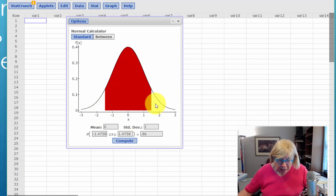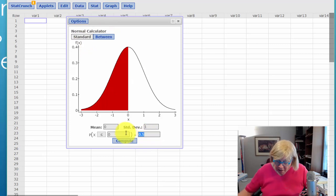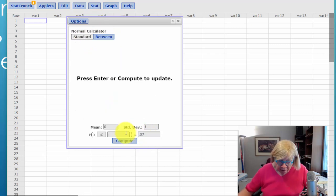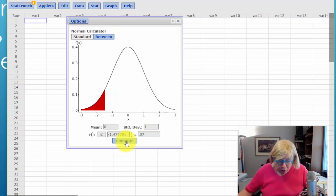Let me go back to standard for a second and put 0.07 in there and compute. Here we see the left side of the standard normal curve as Brandon described it.